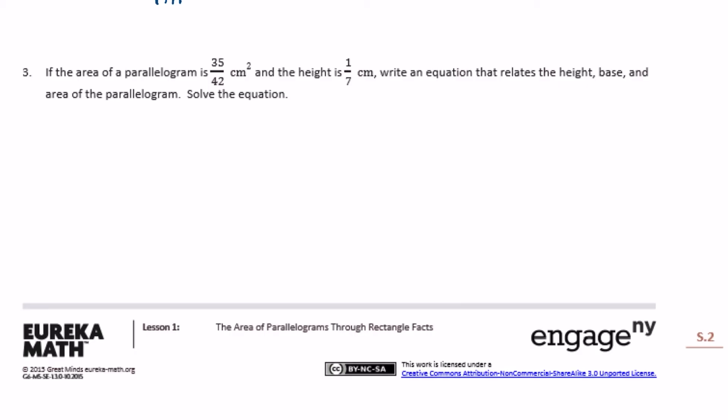Number three: if the area of a parallelogram is 35/42 centimeters squared and the height is 1/7 centimeter, write an equation that relates the height, base, and area of the parallelogram. Solve the equation. We know that the area, so base times height equals the area. The area is 35/42, and the height, we don't know the base, but we know that the height is 1/7.